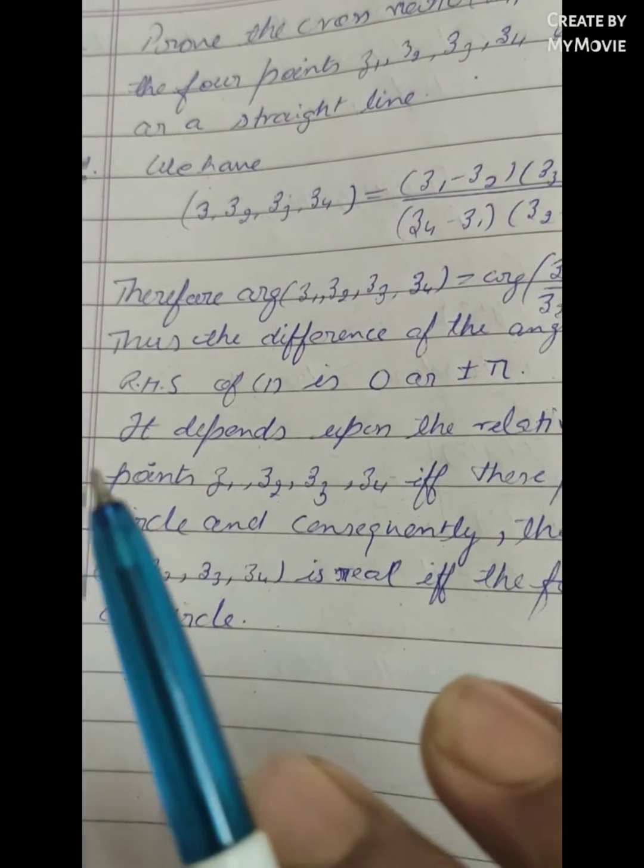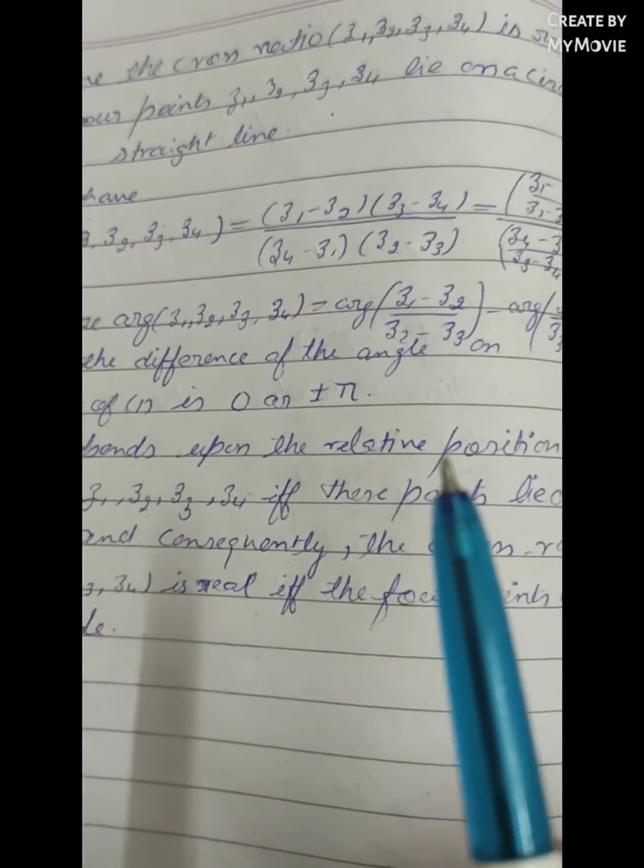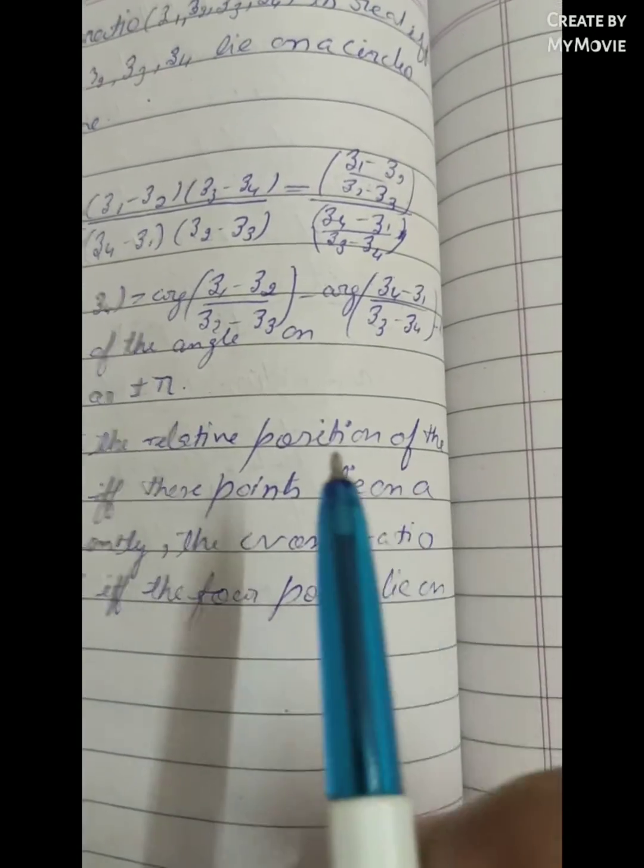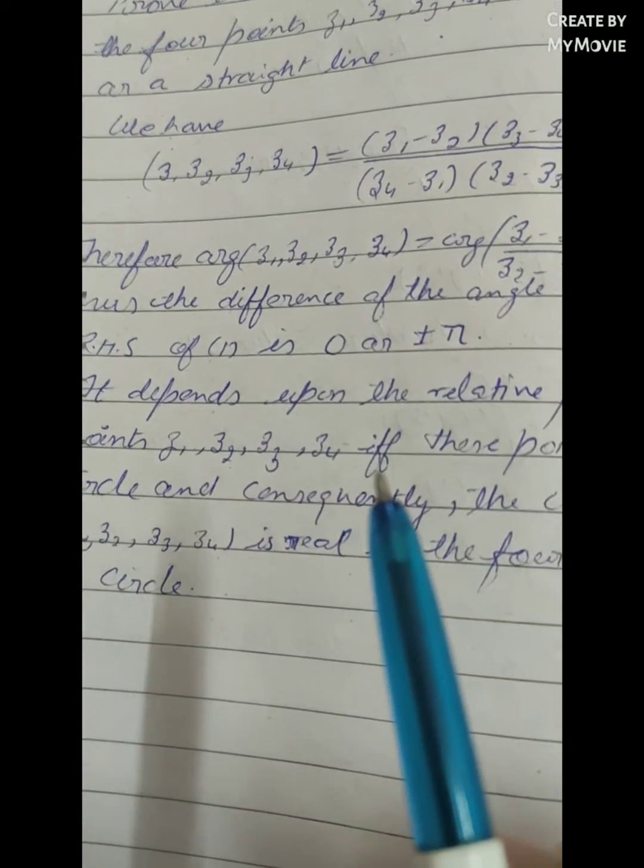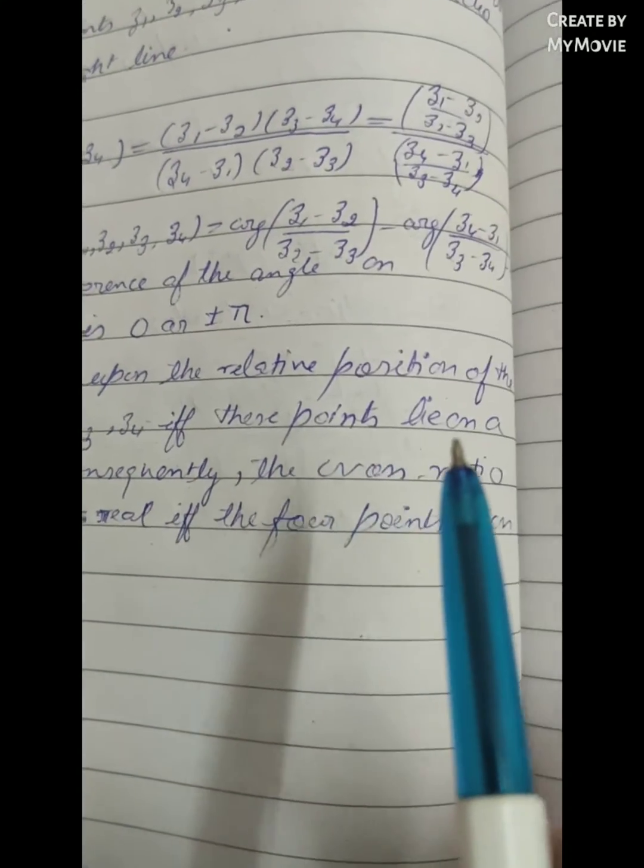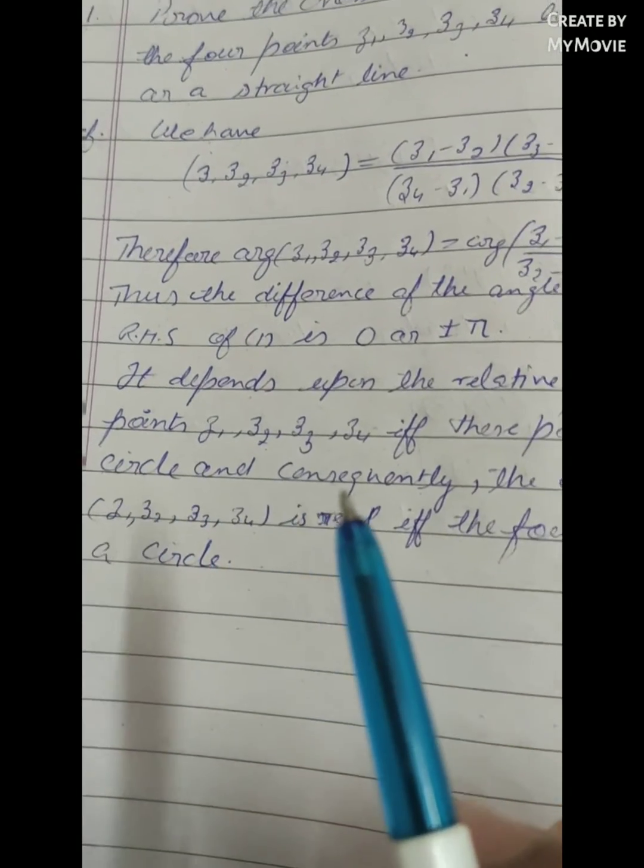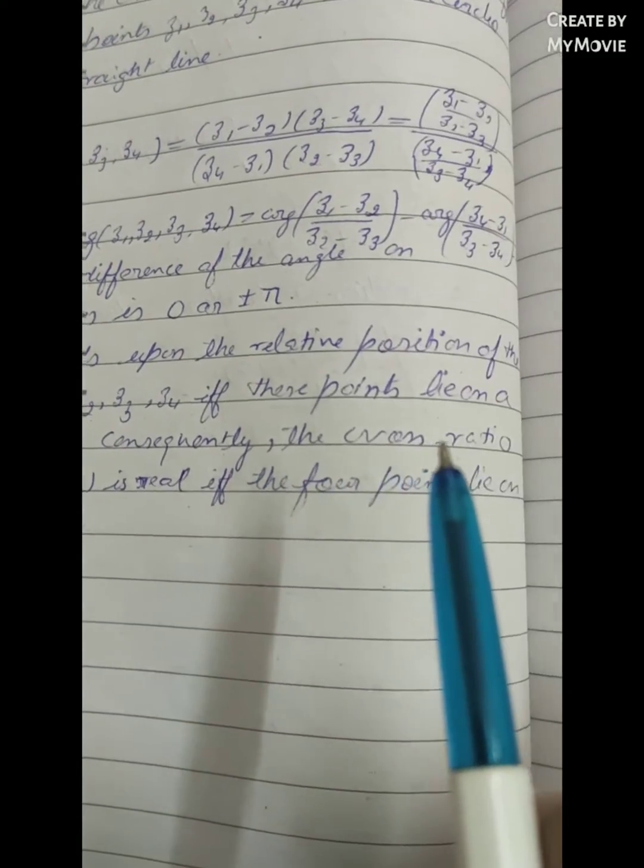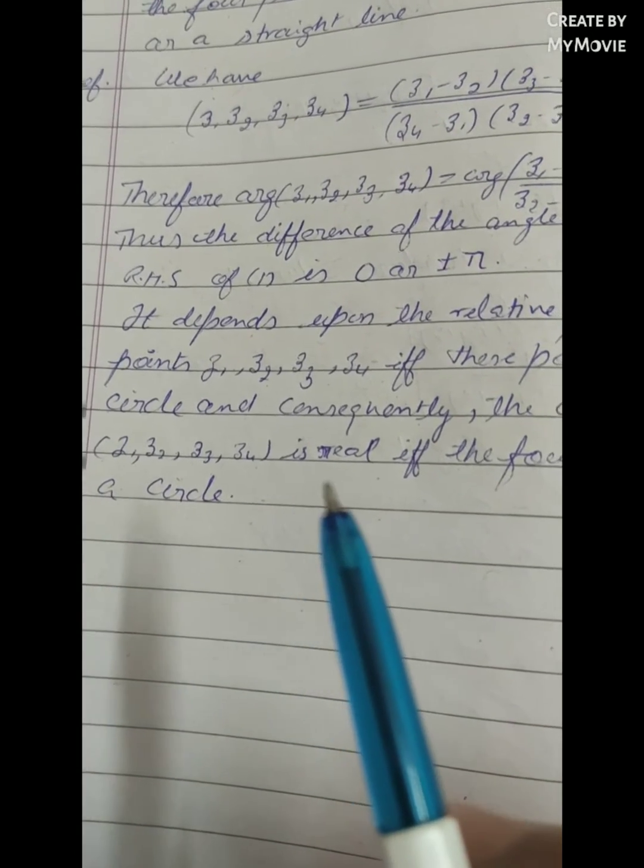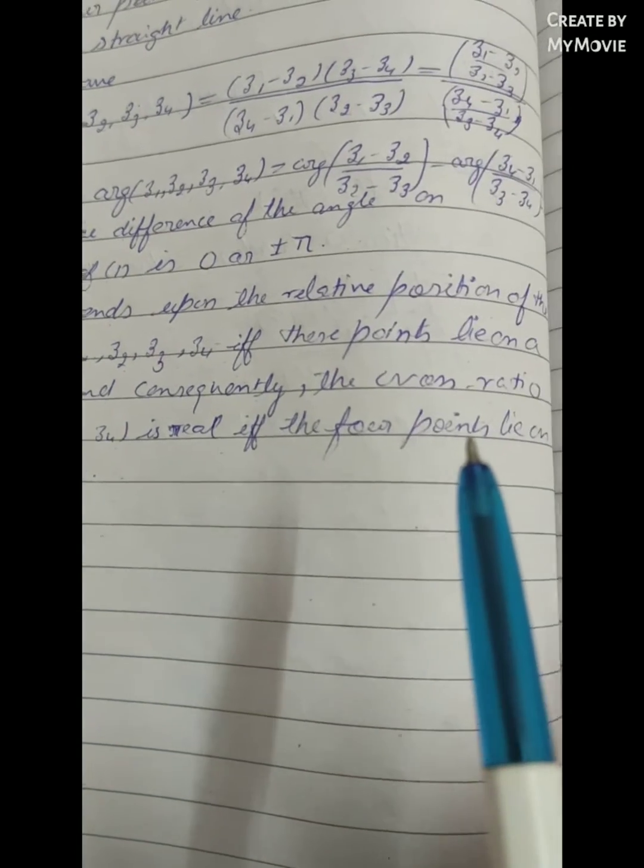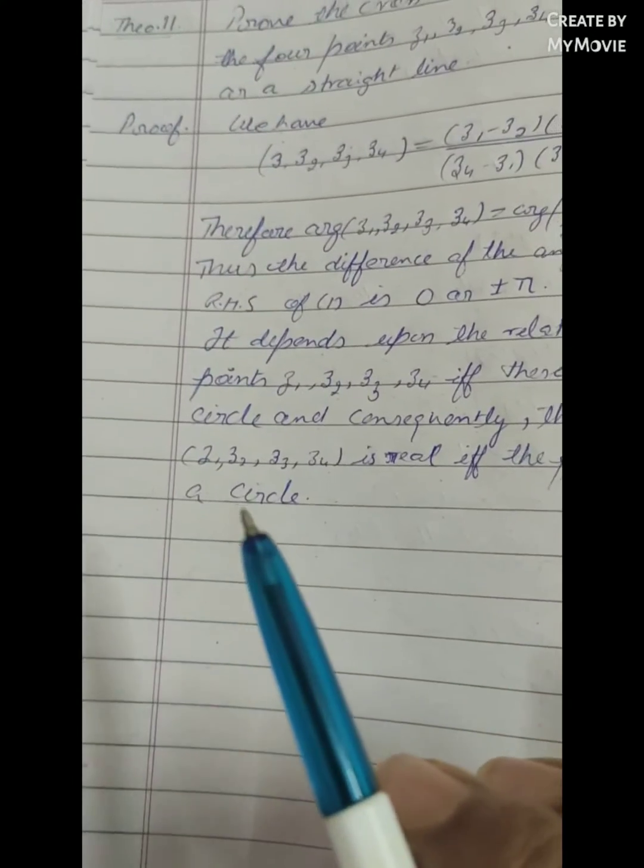0 or plus minus pi. It depends upon the relative position of the points Z1, Z2, Z3 and Z4. Therefore if these points lie on a circle, consequently the cross ratio of Z1, Z2, Z3, Z4 is real if the four points lie on a circle.